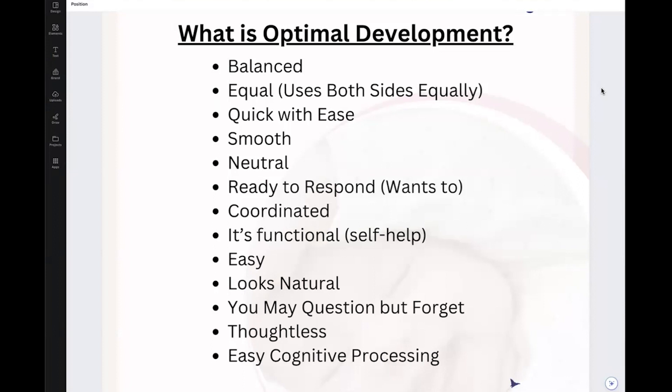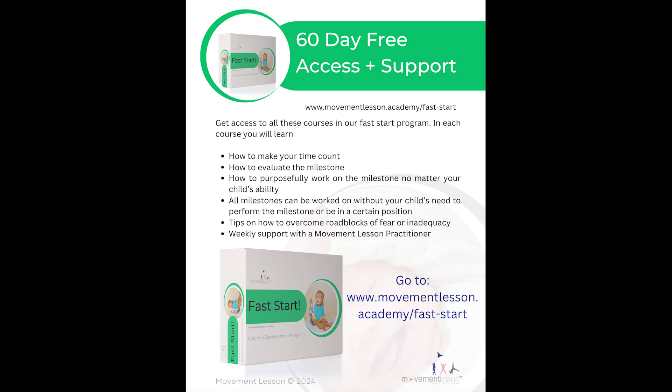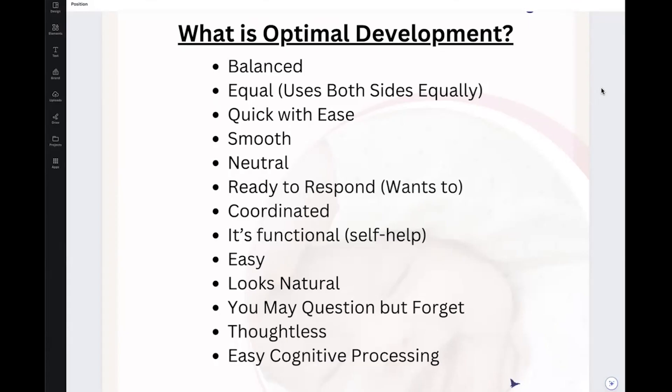Now, is it going to be an overnight fix? No. We all want an overnight fix for our kids. At the same time, the situations are going to vary — there are some fixes for some kids, and for other kids we just need to keep optimizing the system so they're getting the experience of optimal development and movement is becoming easier, more smooth. They don't have to think about it as much. They're more in a neutral state versus really stiff or really floppy, and that cognitive processing becomes a lot easier.